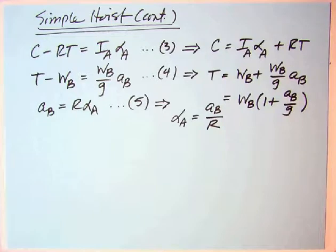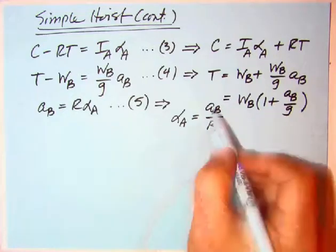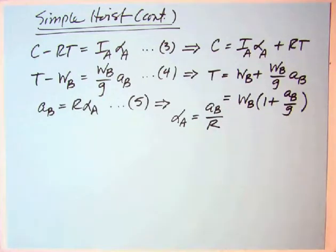From three we get C is equal to IA alpha A plus the RT term. The tension comes out to be very similar except it has a plus here instead of a minus. So T will be greater than W sub B. And in the other example, the MERM example, this was one minus. So therefore, tension was less than B. And then, since we know AB, we can just solve for alpha A. So let's put all those numbers in and see what we come up with.